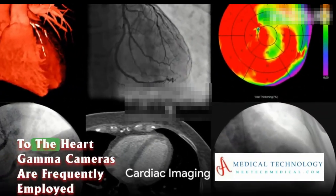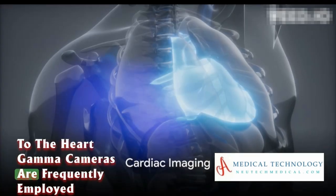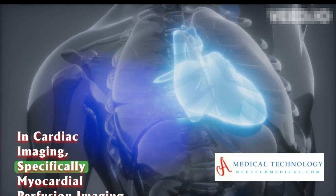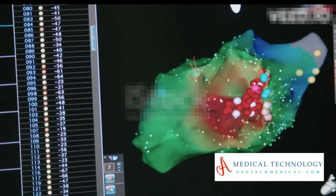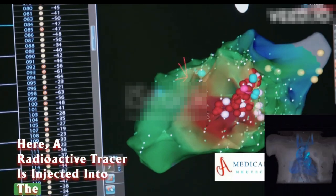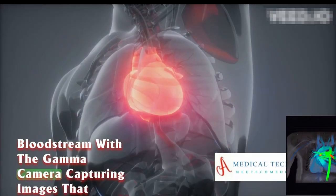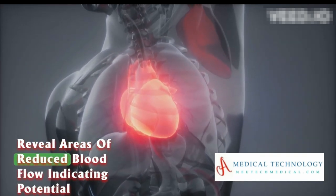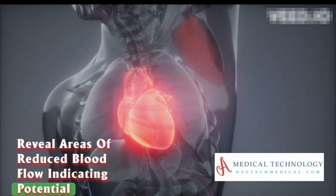Gamma cameras are frequently employed in cardiac imaging, specifically myocardial perfusion imaging. A radioactive tracer is injected into the bloodstream, with the gamma camera capturing images that reveal areas of reduced blood flow, indicating potential issues such as ischemia or infarction.